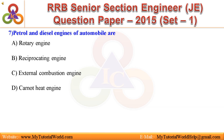Question 7: Petrol and diesel engines of automobile are — A. Rotary engine, B. Reciprocating engine, C. External combustion engine, D. Carnot heat engine. Answer is: Reciprocating engine.